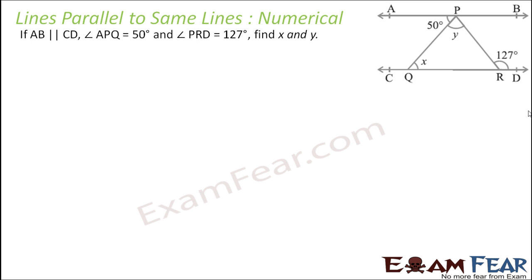Let's take one more example. AB is parallel to CD. Angle APQ is 50° and angle PRD is 127°, with points X and Y to find. Since these lines are parallel, this angle has to be 50° by alternate angles — pretty easy. And since angle PRD is 127°, the supplement is 53°. Using the angle sum property, Y comes out to be 70°. So we have found the values of X and Y.